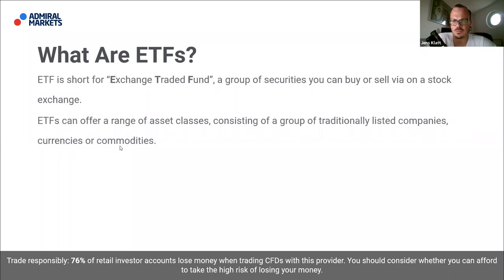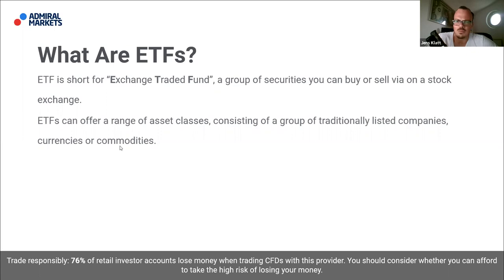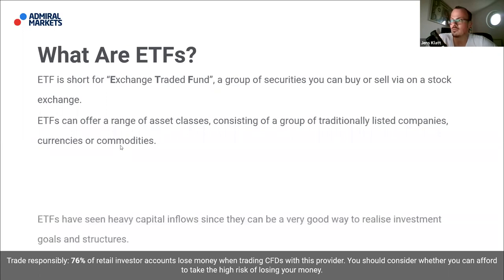For example, when looking at gold ETFs like the GDX, we're usually looking at gold mining stocks. Barrick Gold has over 10% weight in the GDX, but the remaining 90% consists of other gold mining stocks — giving a quite diversified way to invest in the gold commodity or precious metal space.